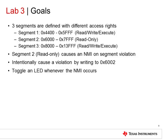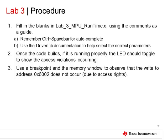The goal for this lab is to create a write-protected memory segment, cause an access violation by writing to that segment, and observe the result of that access violation. Open the source code file lab3_mpu_runtime.c and use the comments as a guide. See if you can fill in the blanks and get the code to build. The solution code is also included in case you need it. Once the code builds and is running properly, the LED should toggle to show that access violations are occurring. You can also use a breakpoint in the memory window to observe that the write to address 6002, which is in a write-protected segment, does not occur. The system issues an NMI when this access is attempted.